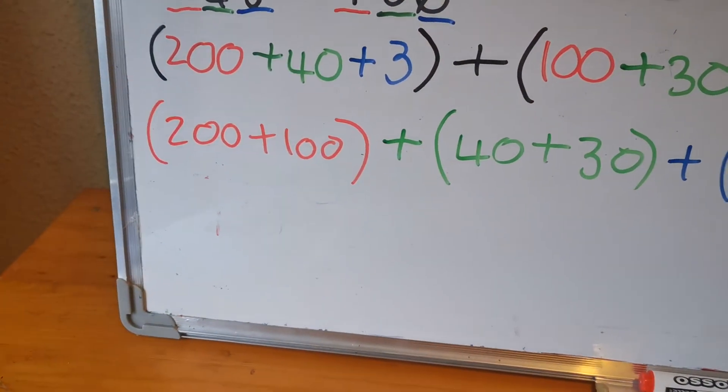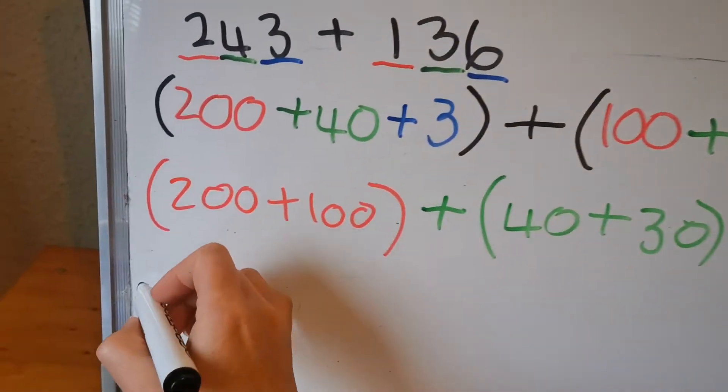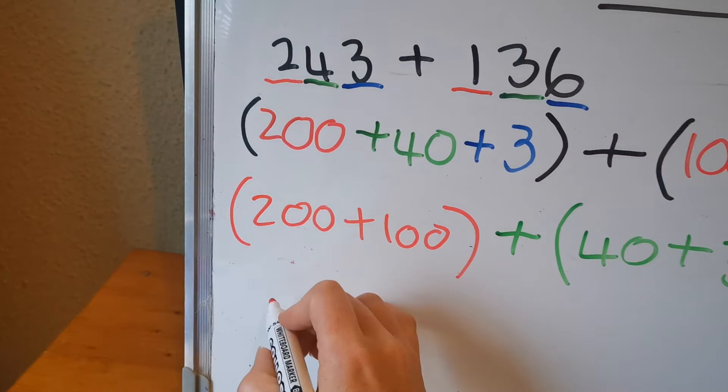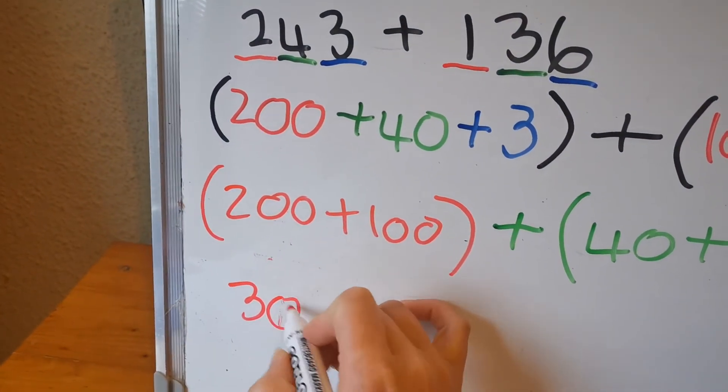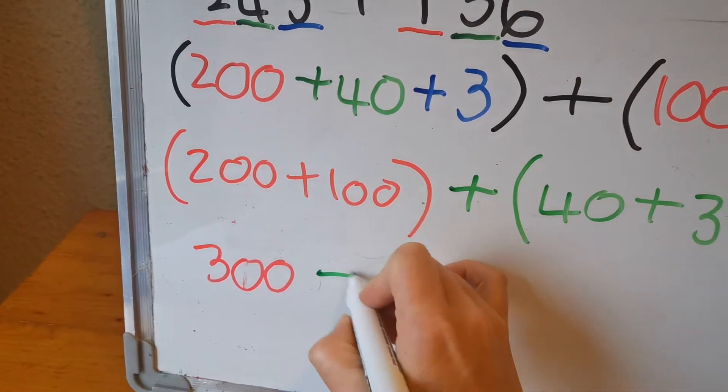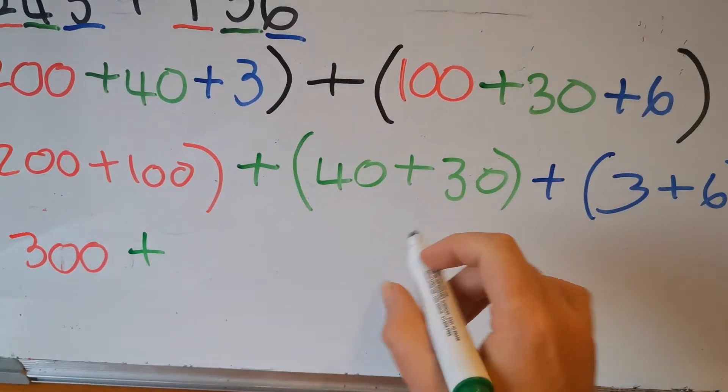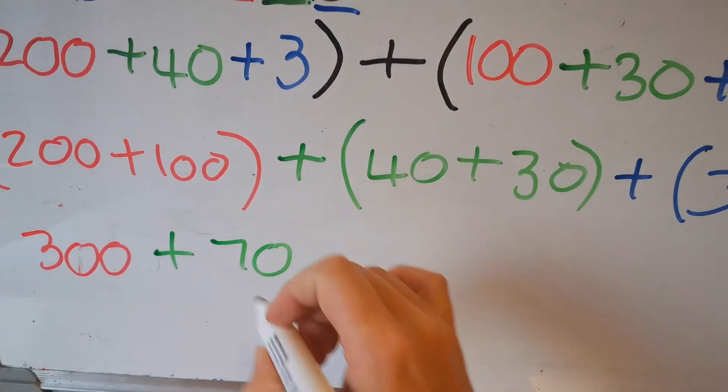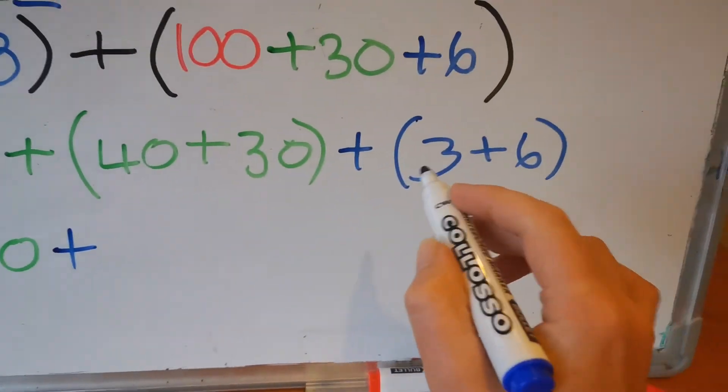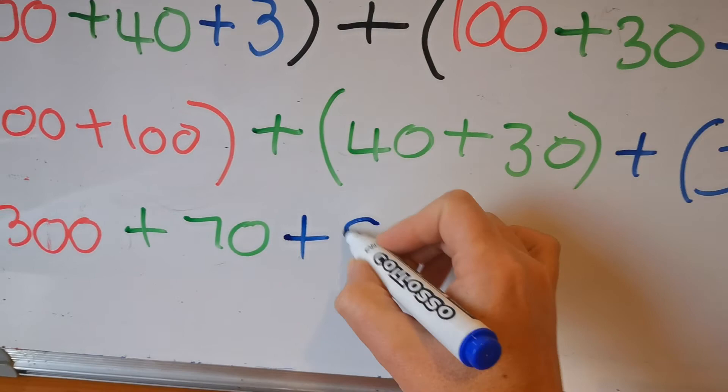Now you're going to add them all together. Let's take the red for the hundreds. So 200 plus 100 is going to give you 300. Then the tens, 40 plus 30 is going to give you 70. And then the ones or the units, 3 plus 6 will give you 9.